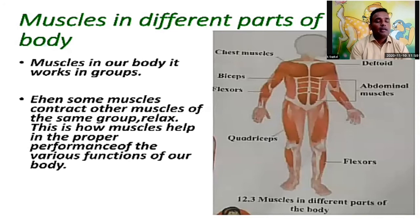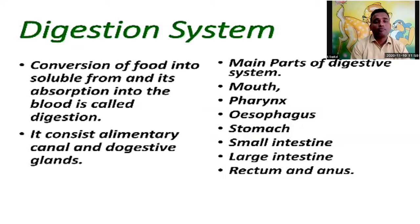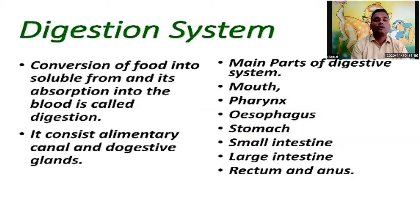The next point is the digestive system. It contains organs starting from the mouth — then pancreas, esophagus, stomach, small intestine, large intestine, rectum, and anus. These organs take part in the digestive system. Digestion means the conversion of food into soluble form and its absorption into the blood. It consists of the alimentary canal and digestive glands.